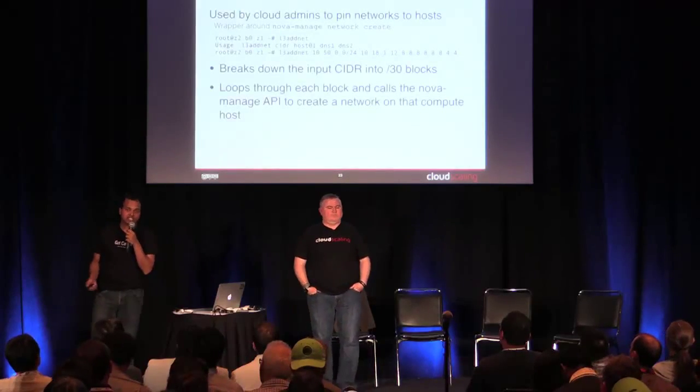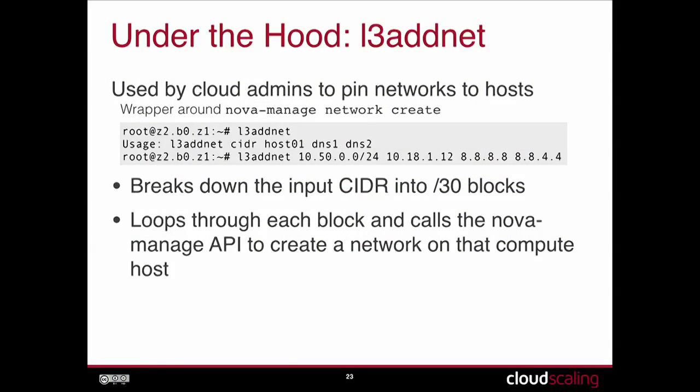The L3 AdNet utility is used by cloud operators to pin networks to hosts. It takes in a CIDR, a host IP or hostname, and a pair of DNS addresses. It loops over the input CIDR and breaks it into slash-30 chunks, then uses the Nova Manage API to create an entry into the database for each chunk. This wraps the typical global pool of IP addresses so that a specific subnet goes to a specific hypervisor node. When the scheduler picks a node, it has a smaller pool of slash-30s to allocate from, allowing deterministic mapping of IP addresses to virtual machines.